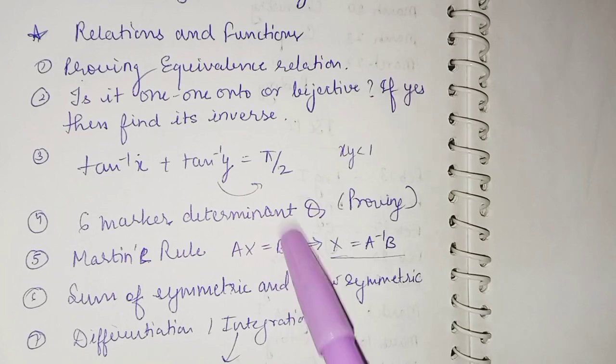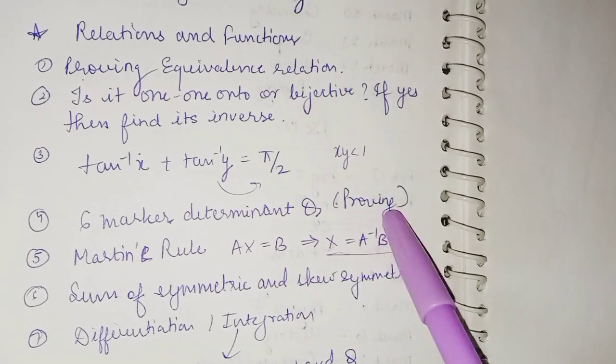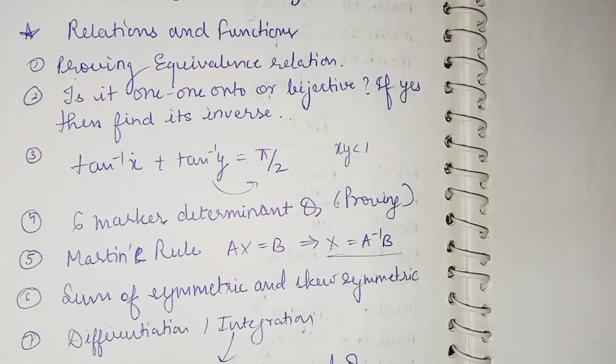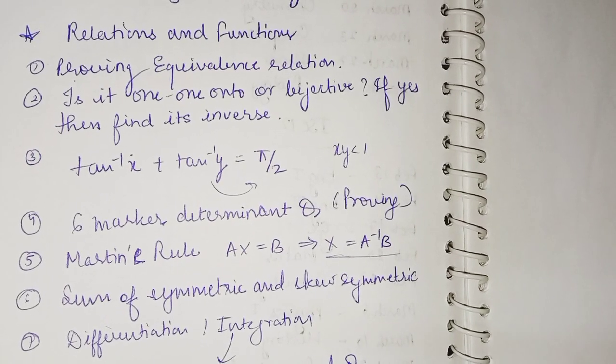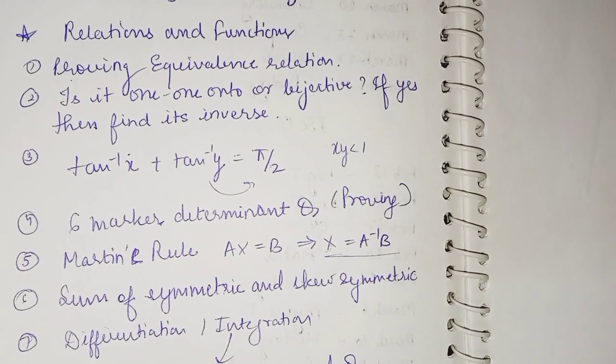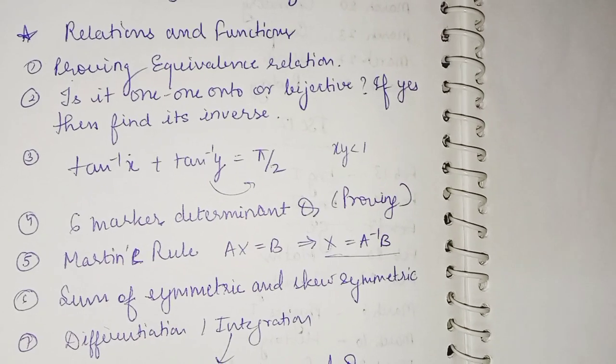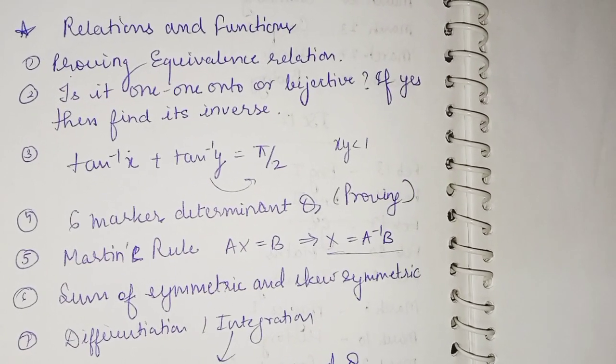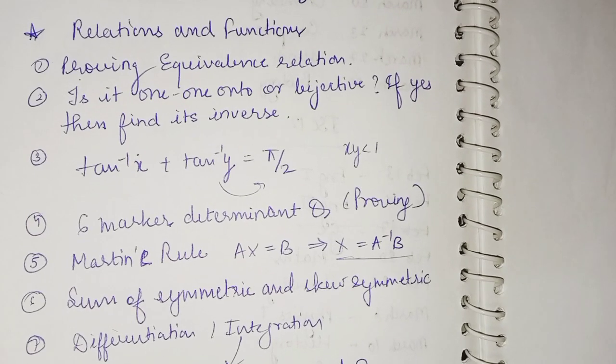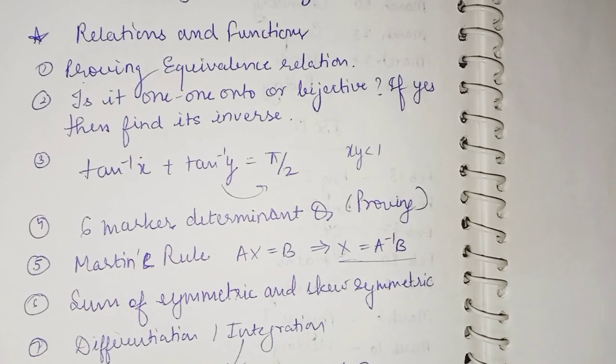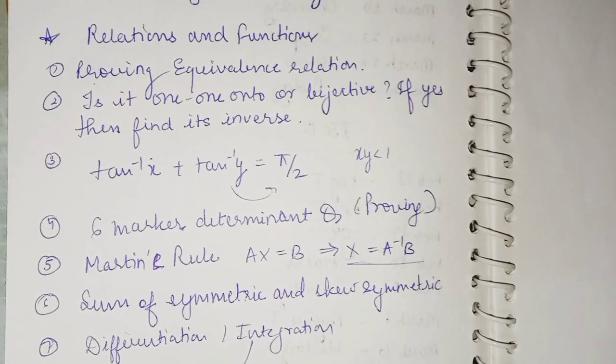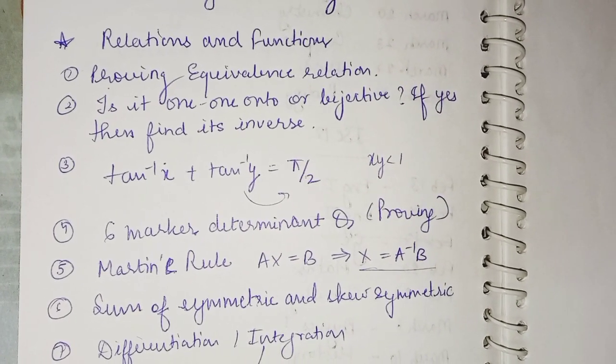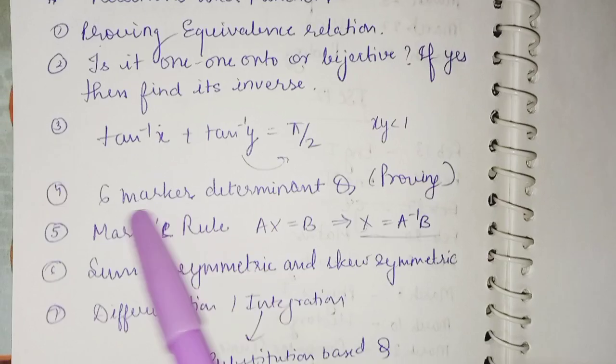Six marks determinant question, the proving part is asked. I remember I could not prove it in my board examination, but at the end, when I had done all the questions, I tried it and I could do. Sometimes you are not able to do a question, please do not hurry or get stressed about it. Later when you complete, you don't have to waste time in any question. If you're not able to do it, leave it, start with the next one, and at the end after completing all the questions, go with that.